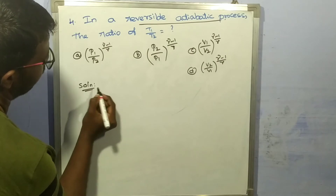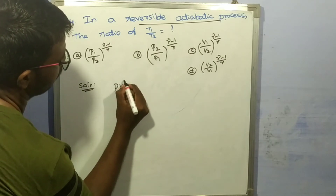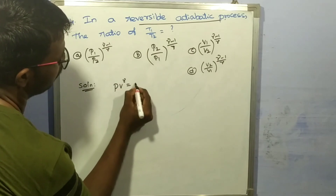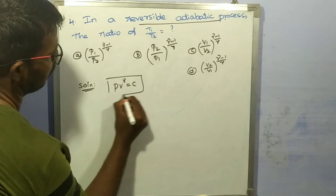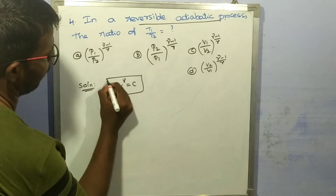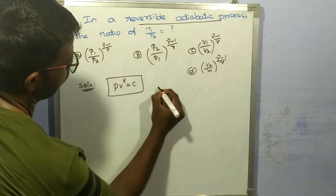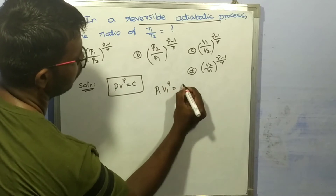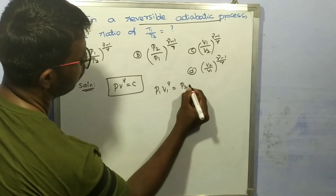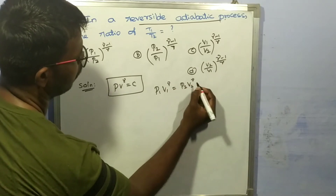For a reversible adiabatic process, PV^γ = constant. Therefore P1 × V1^γ = P2 × V2^γ.